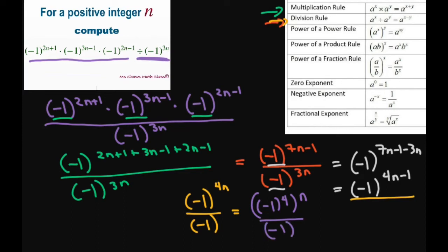What happens is, (-1)^4 is just 1. So this is going to give you, and I'm going to move it up here so we can keep everything on the same page. That's just going to be 1^n, and then we have divided by (-1).